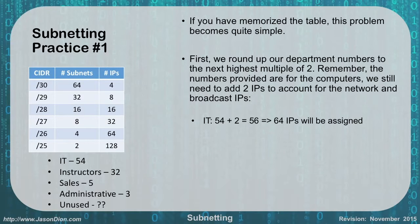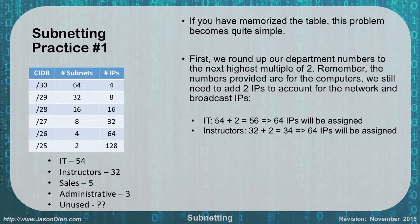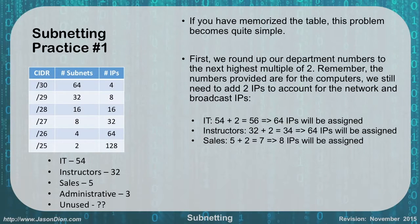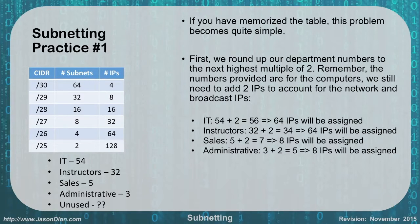For instructors we have 32, so we add two to make it 34, which then rounds up to 64 as well. So IT and instructors will both have the same number in their CIDR notation. For sales, five plus two gives us seven, which rounds up to eight IPs for that subnet. For administrative, three plus two gives us five, rounding up to eight. Sales and admin will both share the same number in their CIDR notation but will be separate subnets.